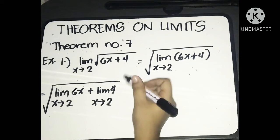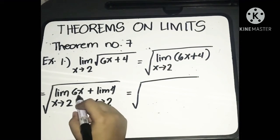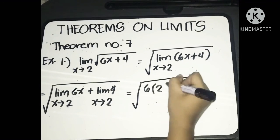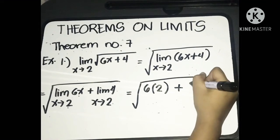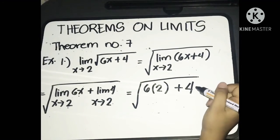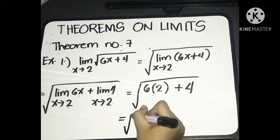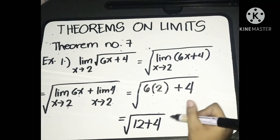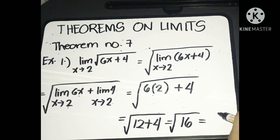Simplifying inside the square root: the limit of 6x as x approaches 2 gives 6 times the limit of x as x approaches 2, which equals 2, so that's 6 times 2 equals 12. Plus the limit of 4 as x approaches 2, which is 4 since it's a constant. So we have the square root of 12 plus 4, which is the square root of 16, and the square root of 16 equals 4. That is the answer.